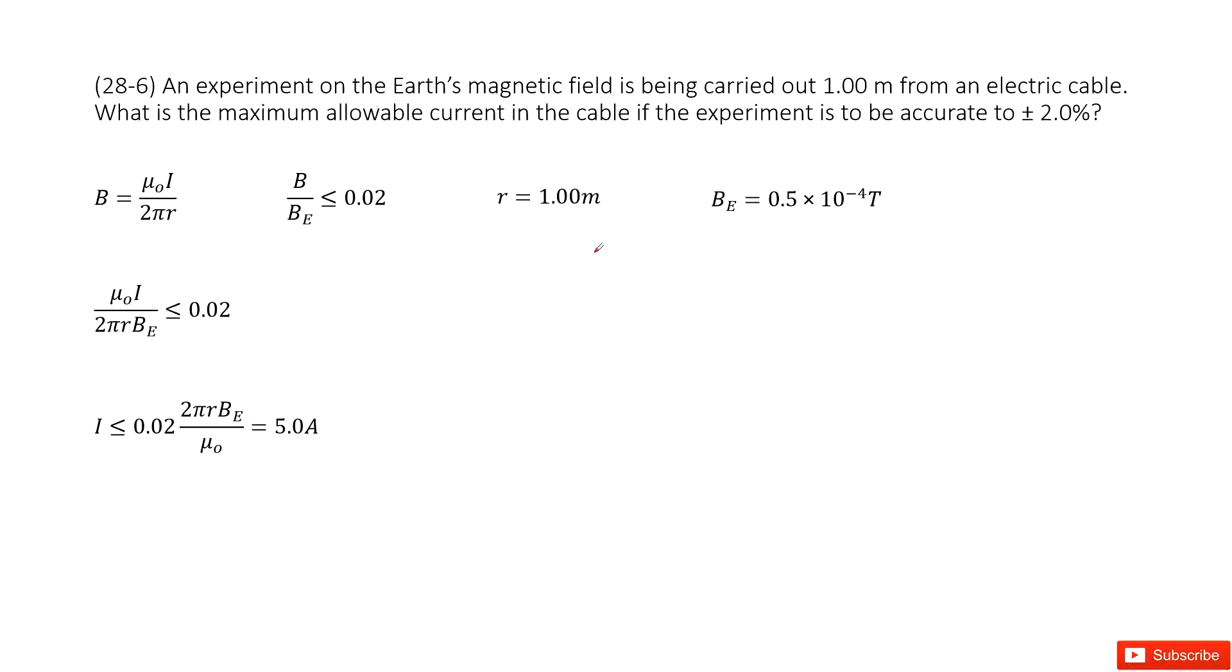We need to make sure this experiment is to be accurate to 2%. That means the magnetic fields due to this wire, this cable, is less than 2% of the Earth's magnetic fields.